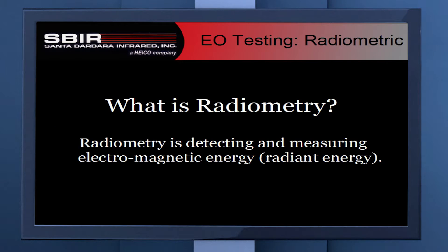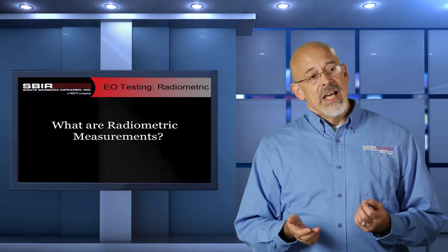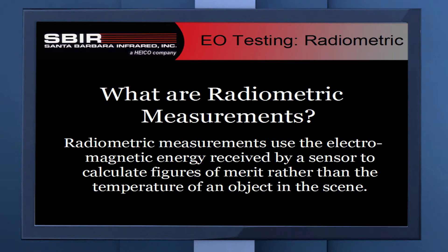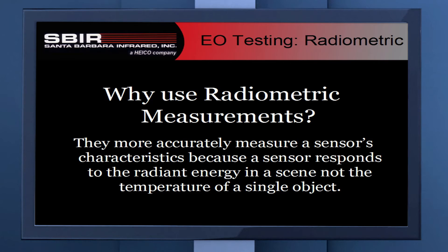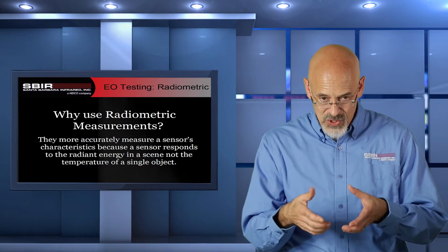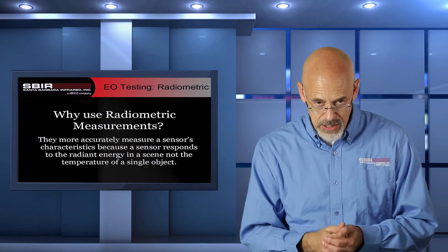Radiometry is detecting and measuring electromagnetic energy, or sometimes called radiant energy. What are radiometric measurements? Those are measurements that use the electromagnetic energy received by a sensor to calculate figures of merit, rather than the temperature of an object in the scene. We use these measurements because they more accurately measure a sensor's characteristics, since the sensor is really responding to the radiant energy that it receives — it's not somehow detecting temperature, it's measuring the radiation that comes off of an object and can determine temperature based on that radiant energy.